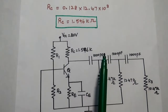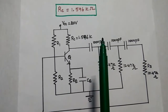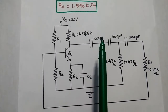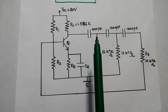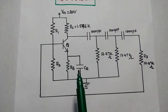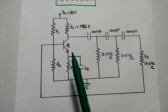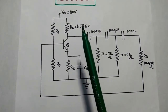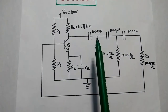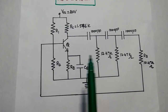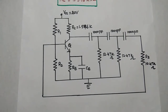The problem asks us to design the RC phase shift oscillator and draw the designed circuit. This is the basic structure of the RC phase shift oscillator. We substitute the values of RC, R, R3, and C into the diagram. This is the final answer.